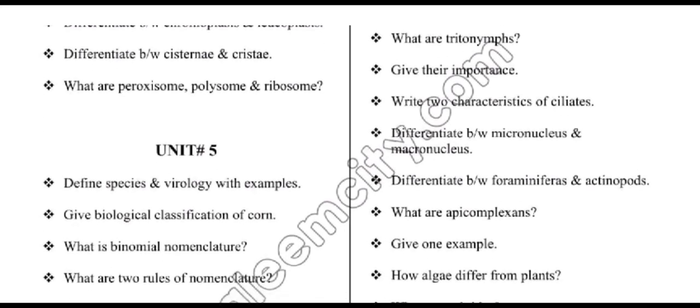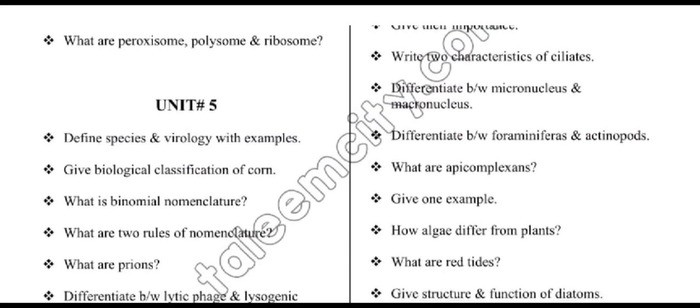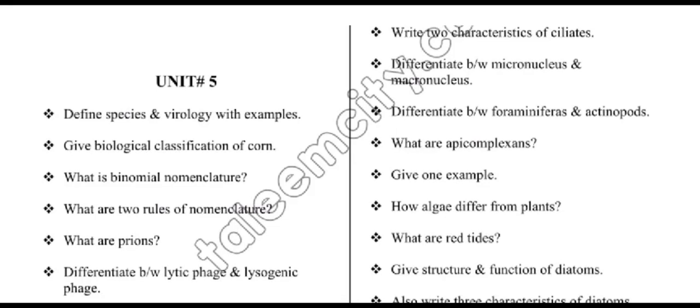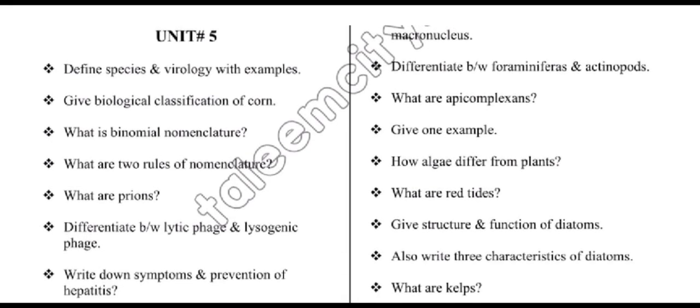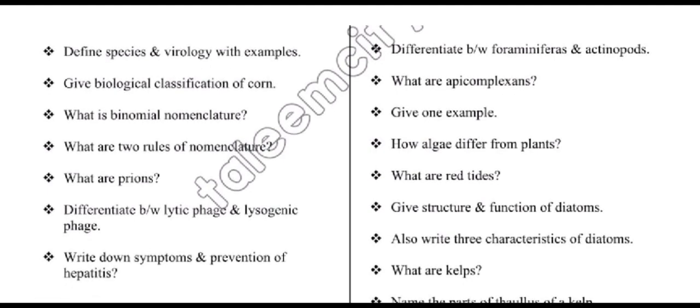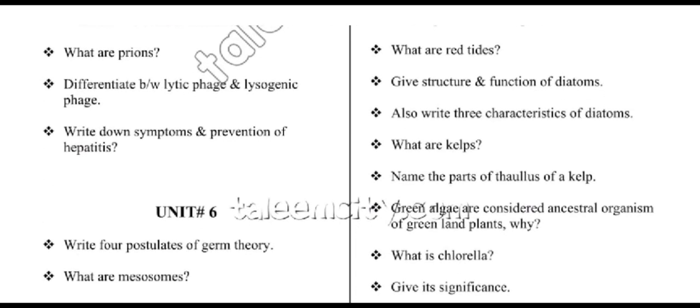From unit number five, we have: define species and virology with examples; give biological classification of corn; binomial nomenclature; two rules of nomenclature; prions; lytic phage and lysogenic phage; symptoms and prevention of hepatitis.